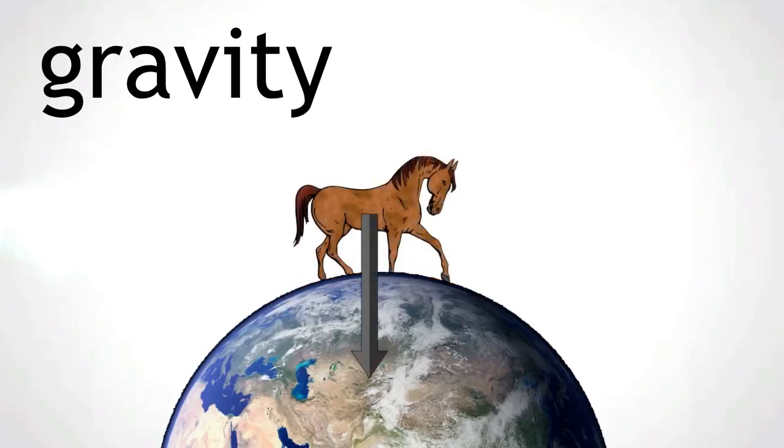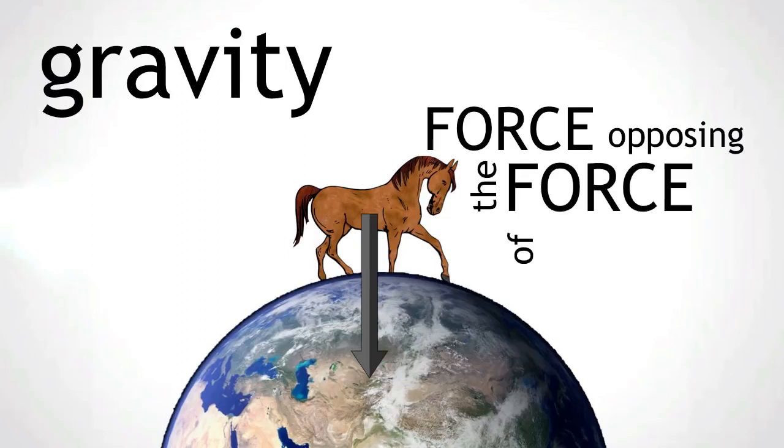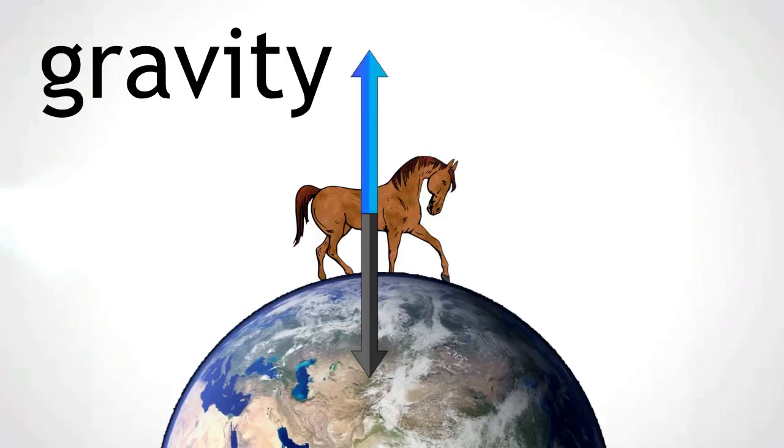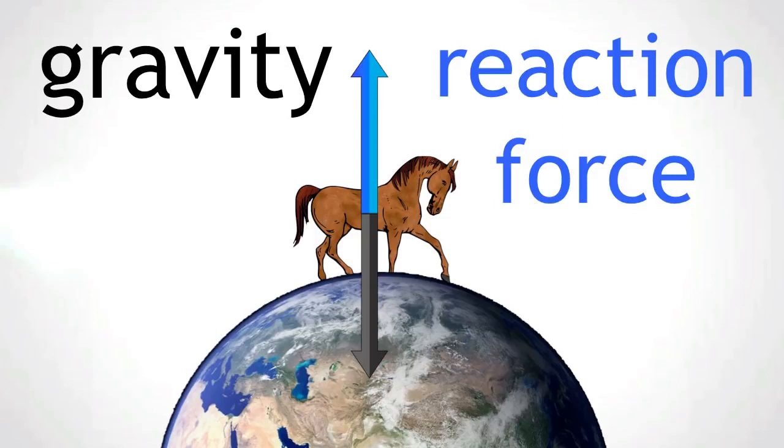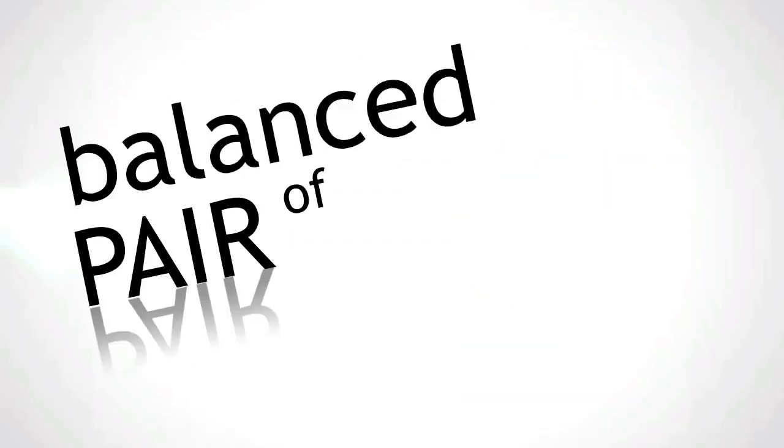As this is not the case, there must be a force opposing the force of gravity. An arrow is drawn in the opposite direction, but equal in size. This force is called the reaction force. As the reaction force is the same size, but acts in the opposite direction to the horse's weight, these two forces are a balanced pair of forces.